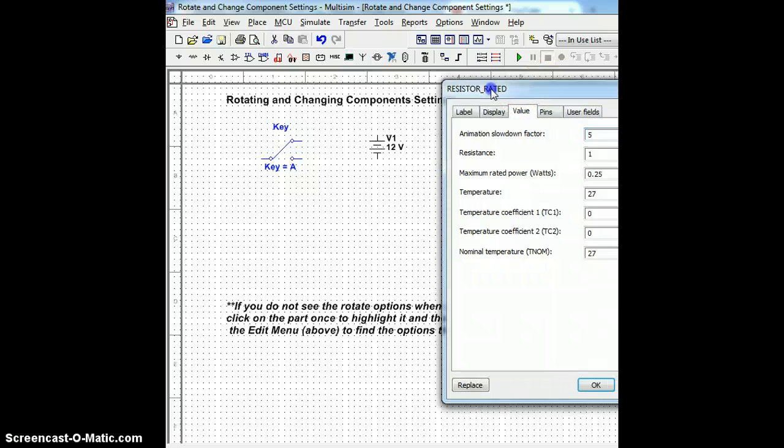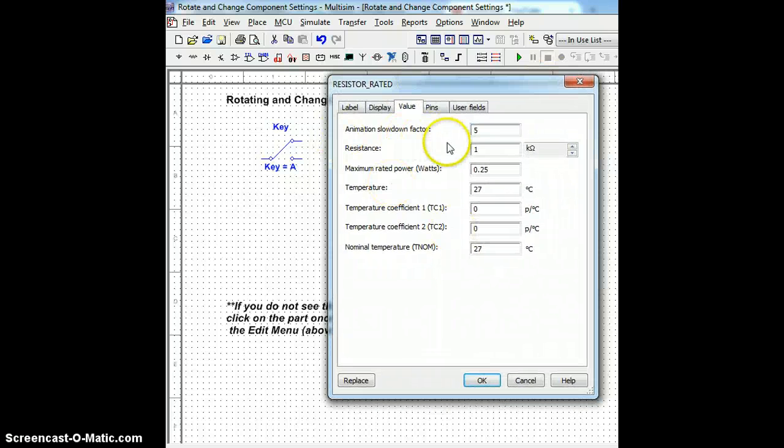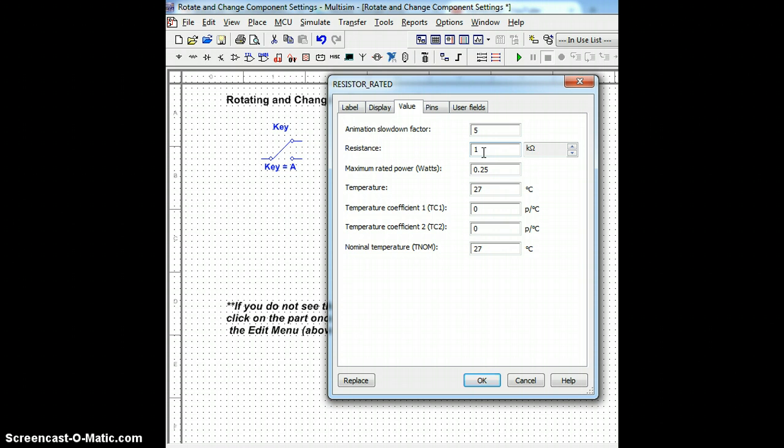Resistor values can also be changed. The resistance is the second option here. Please be careful when changing your values. The resistance of this resistor in standard form is typically 1 kilo-ohm. I can also change the prefix and unit here on the right by simply clicking up or down: ohms, kilo, mega, giga, and so on. Values go both above and below the standard unit.